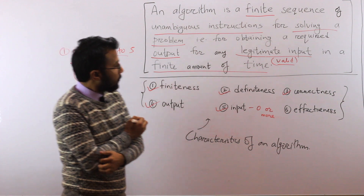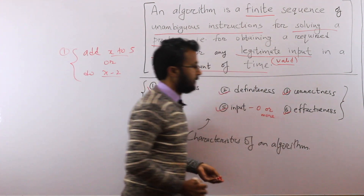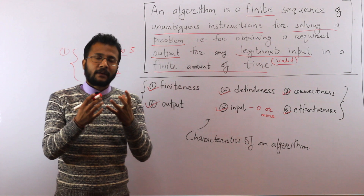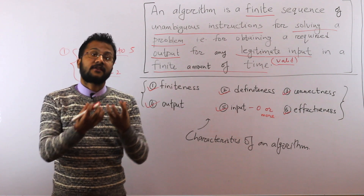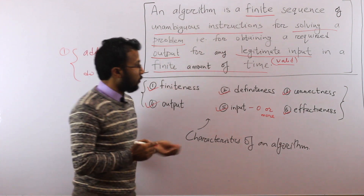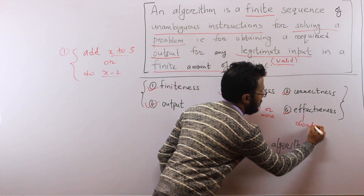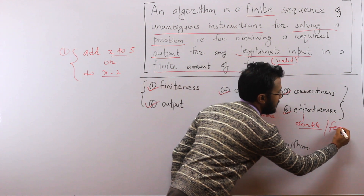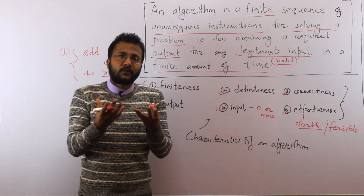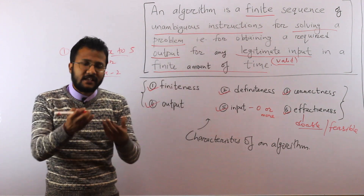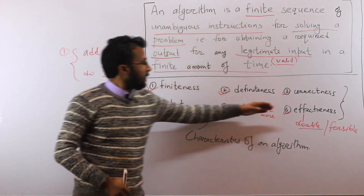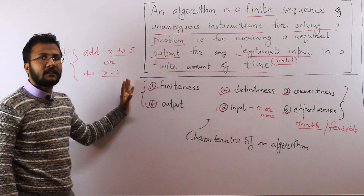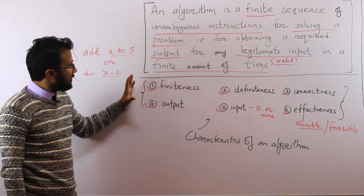There is one more property called effectiveness. When you specify instructions, you should be able to practically carry them out yourself using pen and paper. Whatever is specified should be achievable and feasible. It should not be so abstract that it can't be solved at all. Each and every step should be effective and feasible. These are the properties that every algorithm must satisfy.